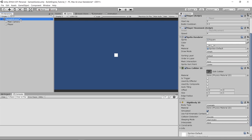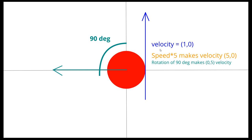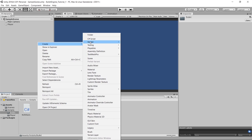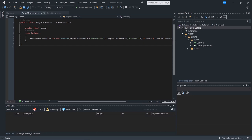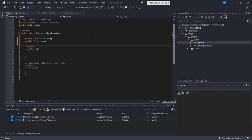The bullet has a basic velocity making it go right, a speed of 5 making it go faster, and a rotation that adjusts the velocity based on the direction. Our bullet needs three basic variables: a public Vector2 velocity, a public float speed, and a public float rotation.